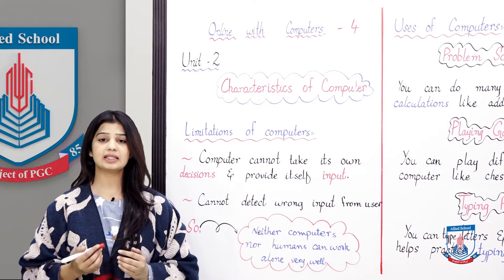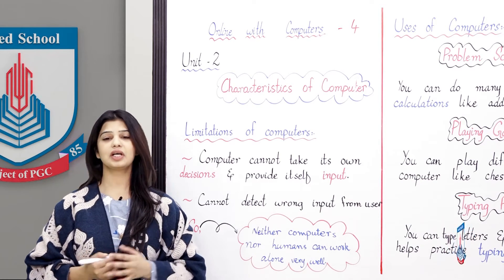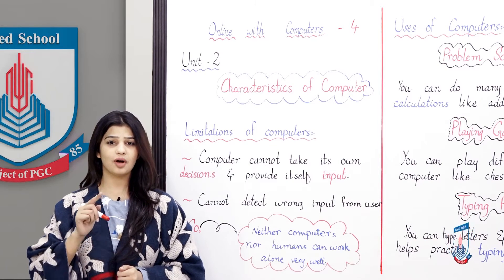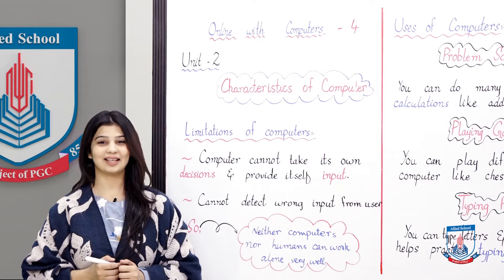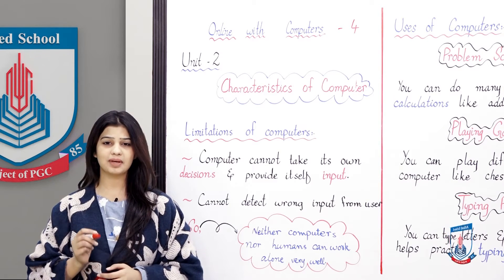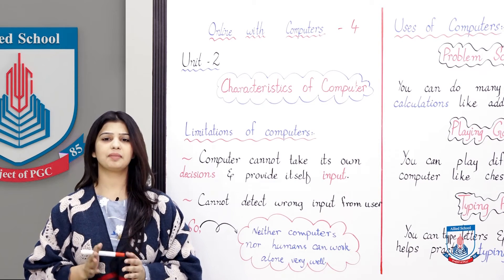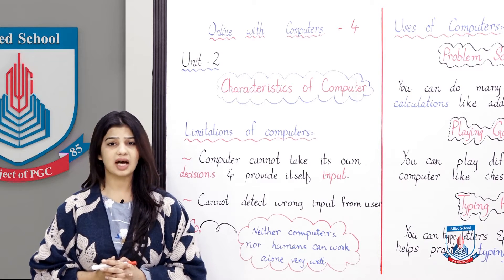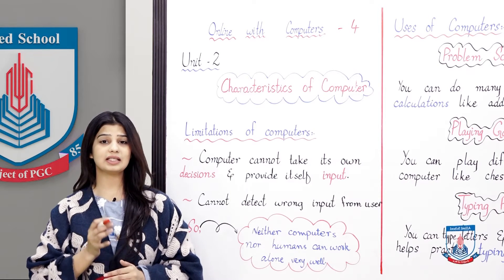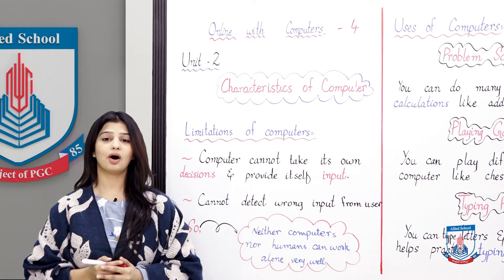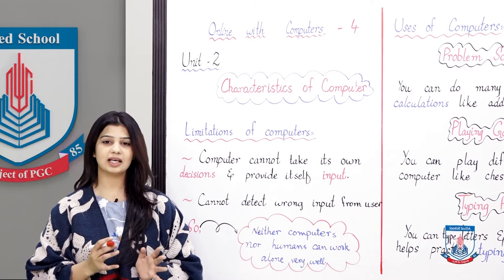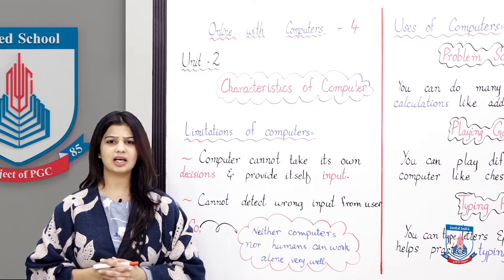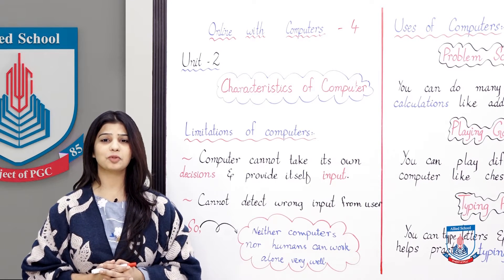For example, if I say I have to do 2 plus 2 — we are not talking about the answer, we are talking about the instruction. The computer needs both data and instruction. The data is 2 and 2, and the instruction is to add them. Until you tell the computer that it needs to be added, how does it know? This is the limitation of the computer — it can never take a decision by itself.